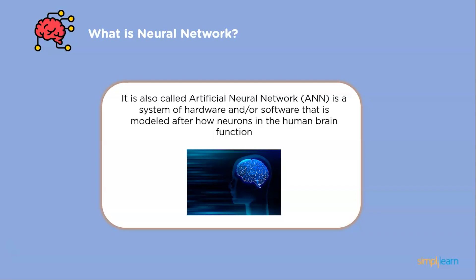A neural network is an artificial intelligence technique that instructs computers to analyze data in a manner modeled after the human brain. Deep learning is a sort of machine learning that employs interconnected neurons or nodes in a layered framework to mimic human brain functions. In a neural network, a neuron is a mathematical function that gathers and categorizes data following a particular architecture, similar to statistical techniques like regression analysis and curve fitting.